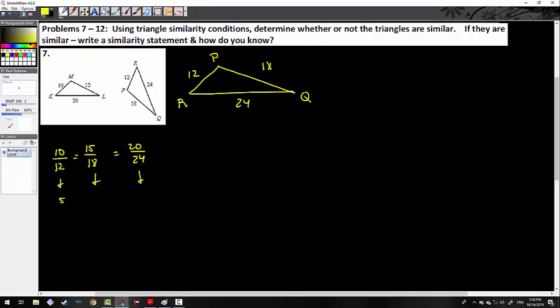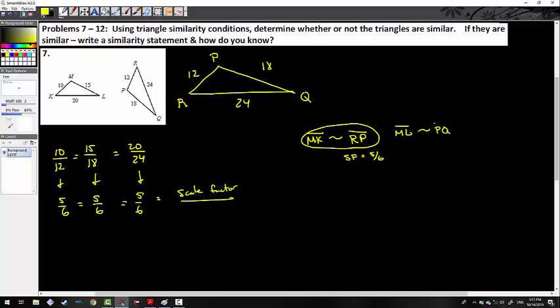So if I divide both of these by 2, I get 5 over 6. If I divide these both by 3, I get 5 over 6. And if I divide both of these by 4, I get 5 over 6, which leads me to believe that this is our scale factor, which will be my justification in every single similarity statement that I say here. So I can say that MK is not congruent, is similar to RP. And my reasoning for that would be scale factor equals 5/6. And in fact, that's going to be my reasoning for all three of them.